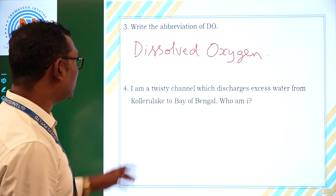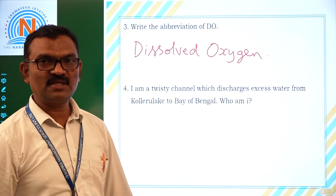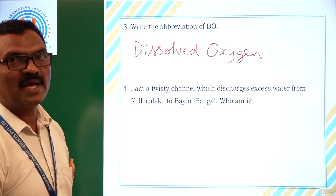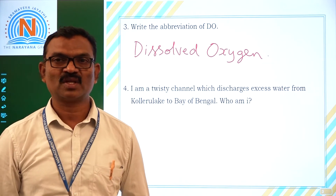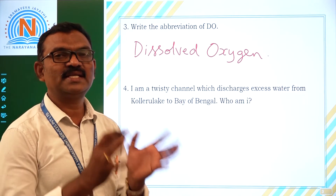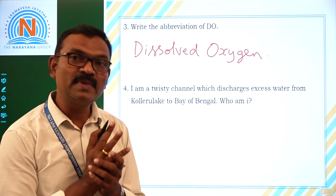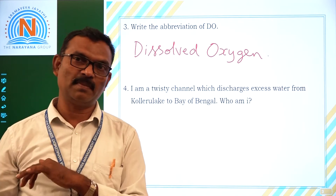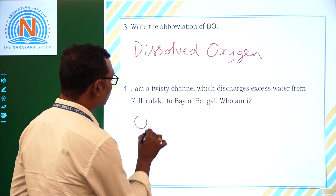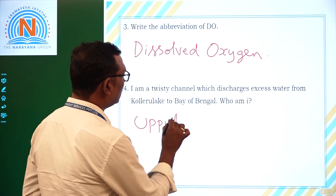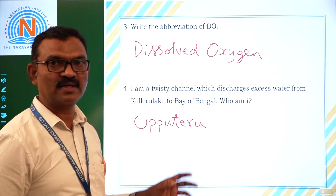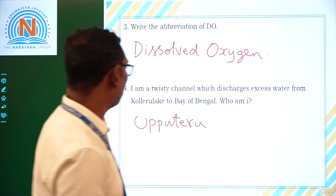Fourth question: 'I am a twisty channel which discharges excess water from Collier Lake to Bayabangal. Who am I?' It is a small channel, about 65 kilometers from Collier Lake to Bayabangal. Its name is Upudel. Upudel carries excess water from Collier Lake to Bayabangal.